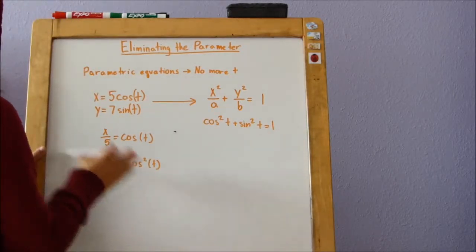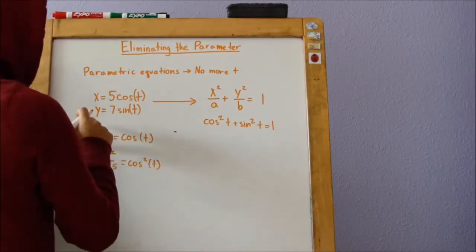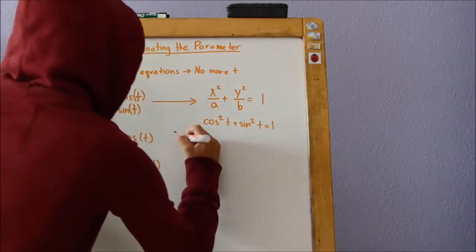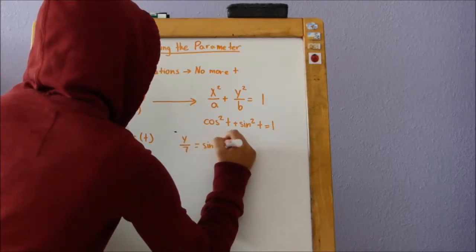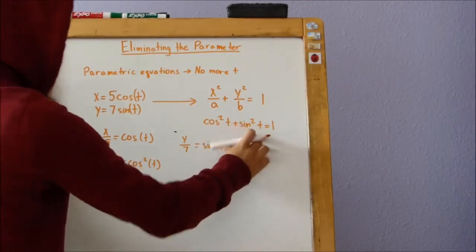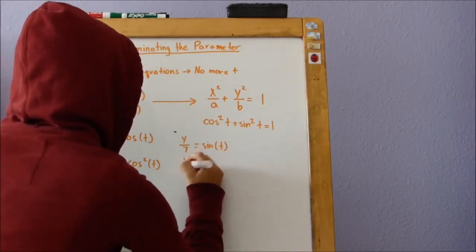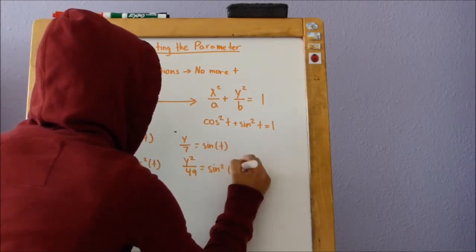Okay, we'll leave that there. Now we'll go on to the sine equation. So we'll do the same thing. Divide both sides by this number here. y divided by 7 equals sine of t. And now we square both sides to get it to sine squared t. y squared divided by 49 equals sine squared t.